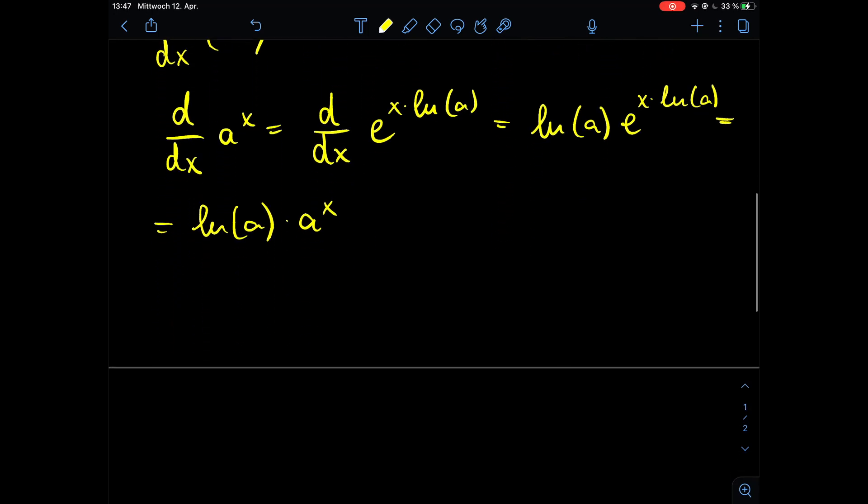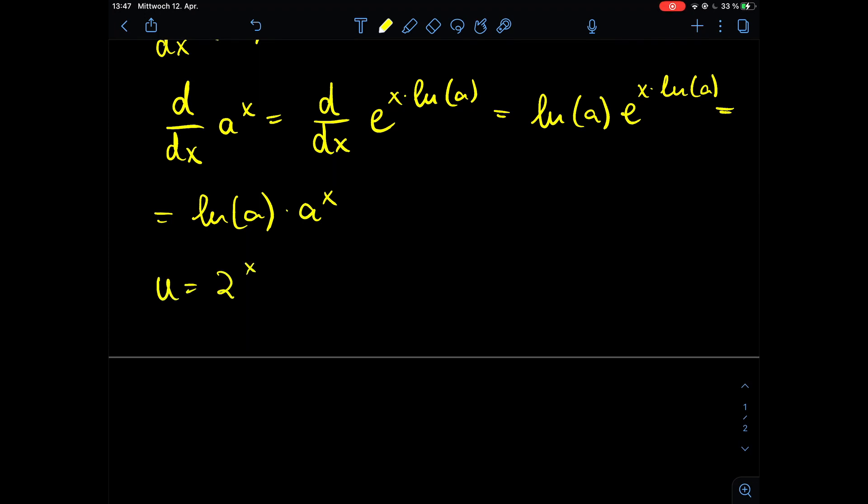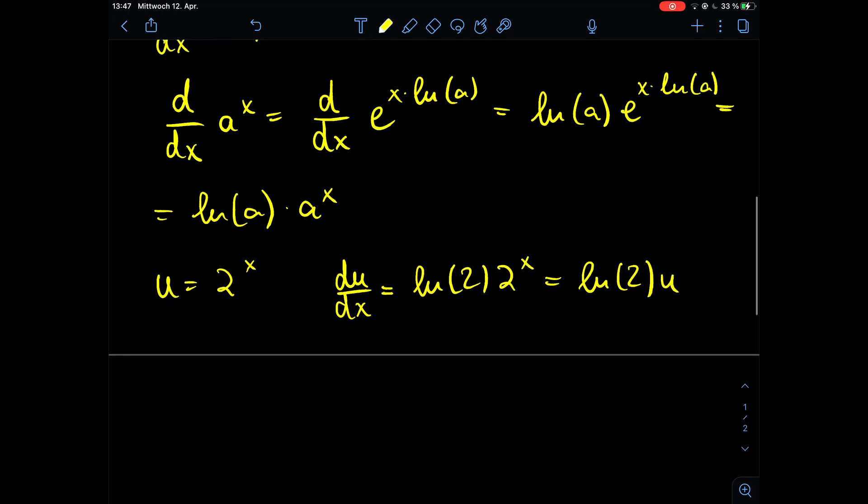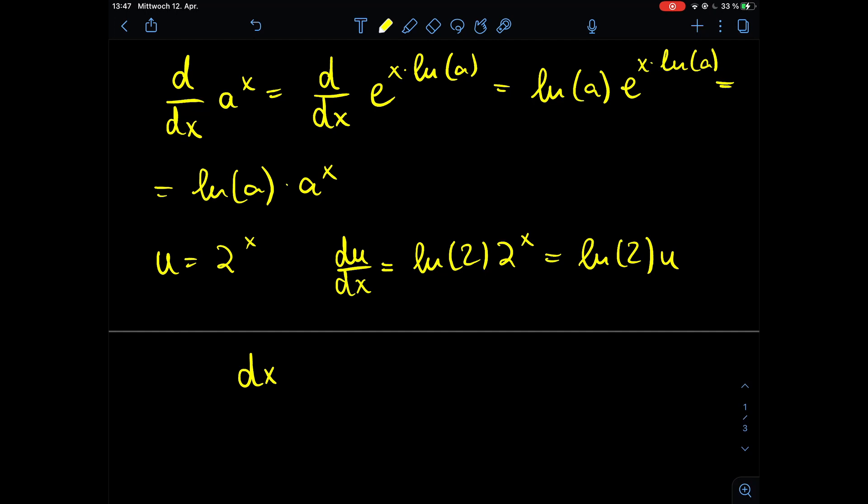We can use that now in our substitution problem where we have u is 2 to the power of x, which means that du over dx is equal to the natural log of 2 times 2 to the power of x. So what we do right now is we plug in the u in this equation, so this is ln of 2 times u. What we want to know is what is dx, and this we get by reforming the equation. So we get dx is equal to du over u times ln of 2.